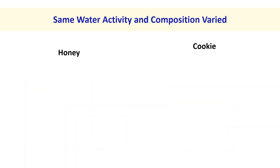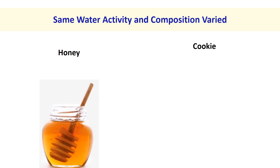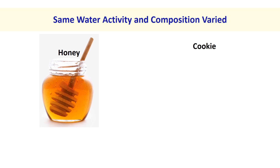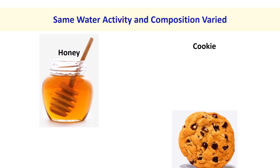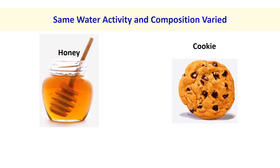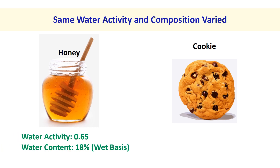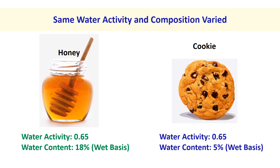Second, same water activity with different composition. In this example, we could observe the same water activity for two food products: honey and cookie. These have the same water activity of 0.65 with different moisture content, that is 18% and 5%. This is due to the difference in the types of solutes in honey and cookie.